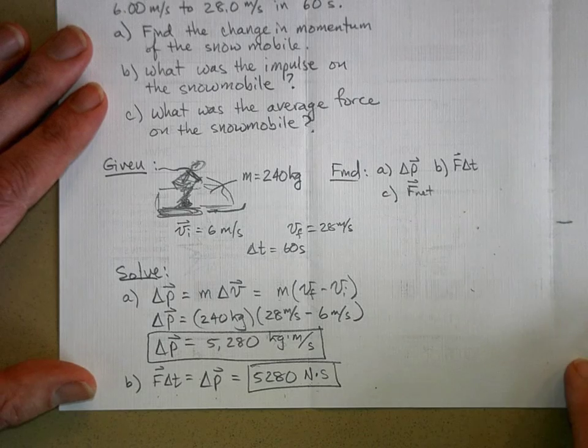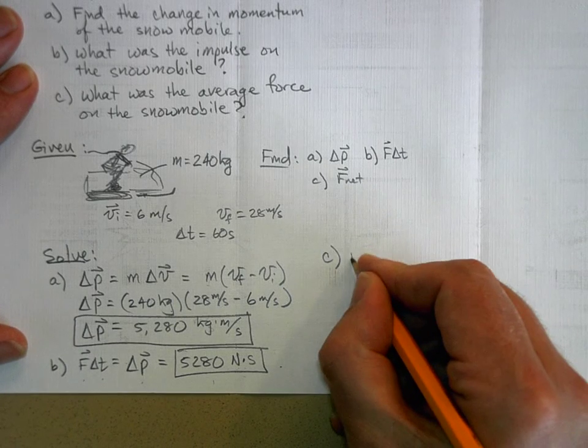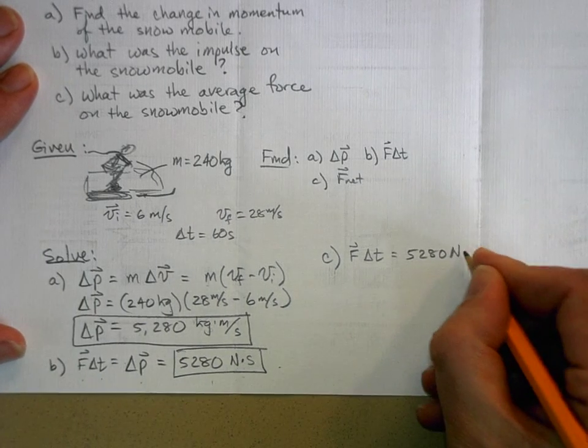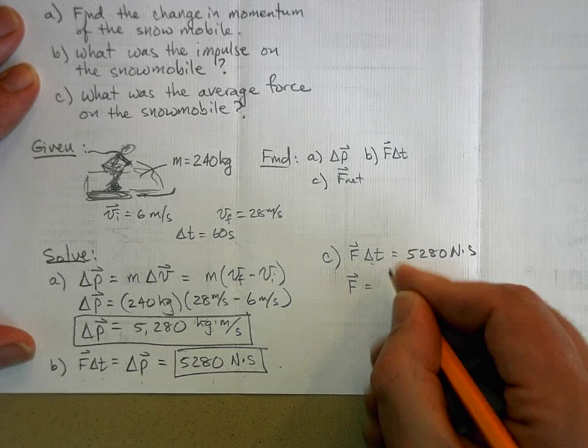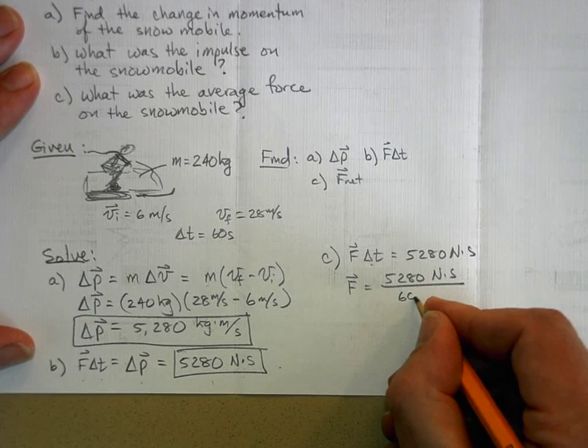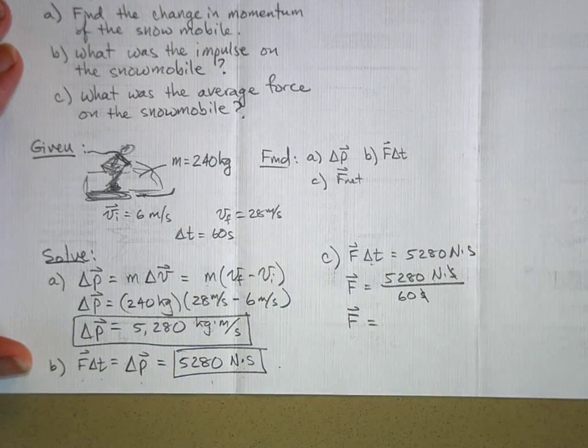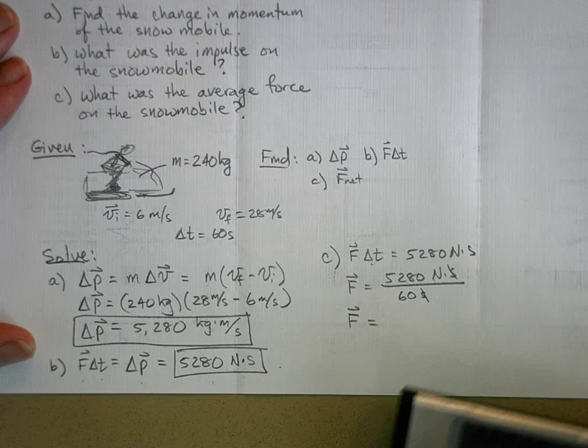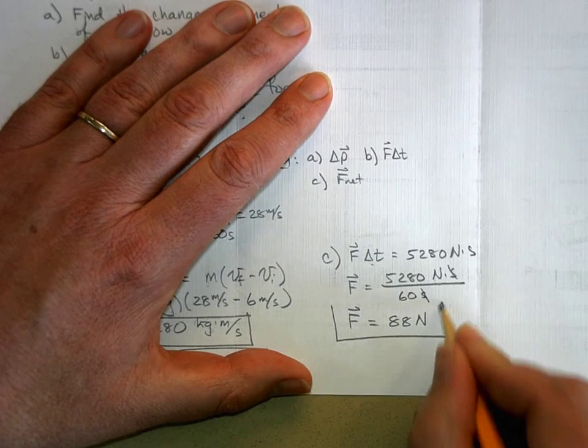Now for part C, I'm going to move over a little bit. We want the net force. So we know that the net force times time is equal to 5,280 newton seconds. So all I have to do is divide that by the time. So the force is equal to 5,280 newton seconds divided by how much time? 60 seconds. And notice the seconds cancel, leaving newtons. And so the average net force on the snowmobile is 5,280 divided by 60. And I get 88, is that right? Yeah. 88 newtons. And there's my answer.